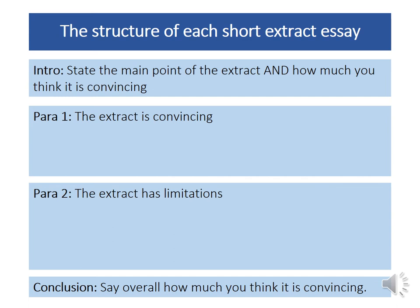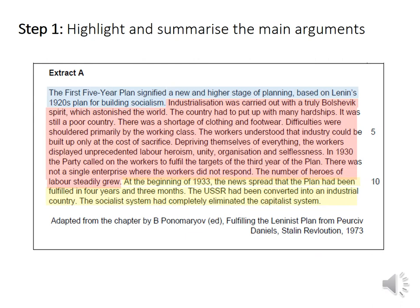When you go into that exam, I want you to have different coloured highlighters. When you read through each extract, read it twice. The first time, read it blank — no annotations, no highlighting, just read it. This example is from a historian called Ponomaryov, and this extract is all about Stalin's first five-year plan. When I'm reading this, what I'm looking for are the big arguments that this extract is making. In this example, I think there are three main arguments I can pull out that Ponomaryov is trying to make.